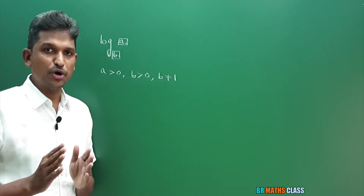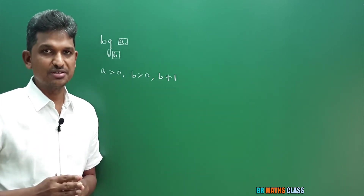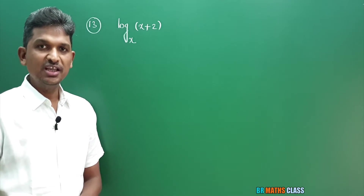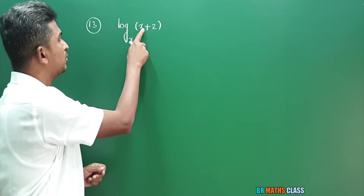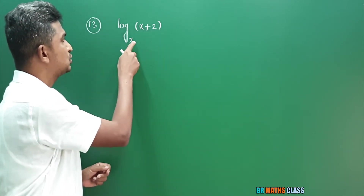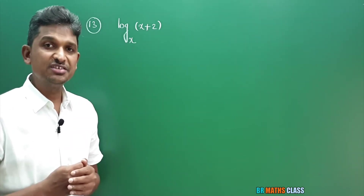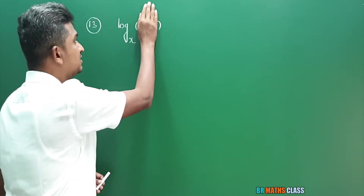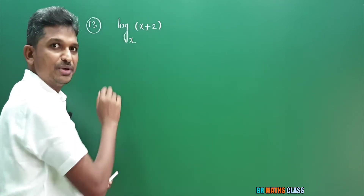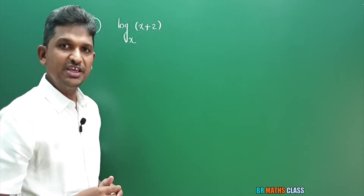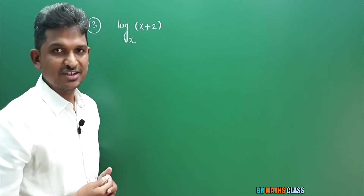All these things we already learned in the definition of logarithmic function. To understand the problems in this class, these things you must know. Log A base B is defined only when A and B are positive real numbers and this base cannot be equal to 1. Keep these points in mind to understand today's problems.